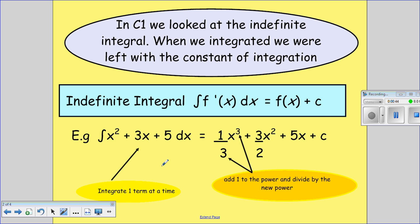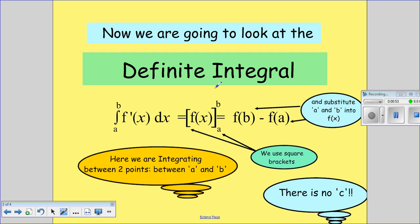Now if you remember, when we integrate we add 1 to the power and divide by the adjusted power, so this would become x cubed over 3. Now with the definite integral, we're integrating between two points and we no longer need the c.